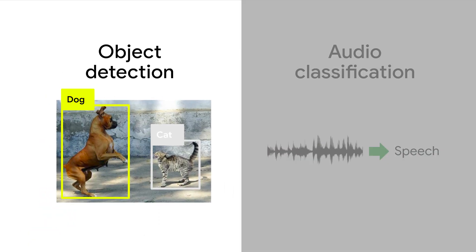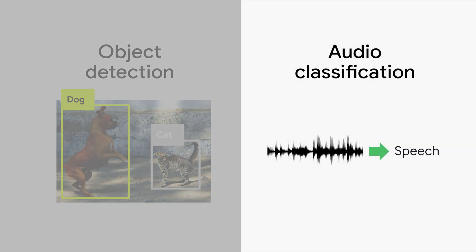With object detection, your Raspberry Pi can recognize objects from its camera feed. And with audio classification, it can recognize different types of sound picked up by its microphone, like human speech or cat mewing.